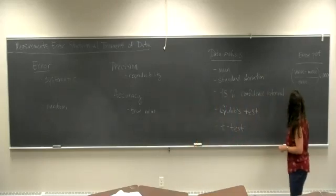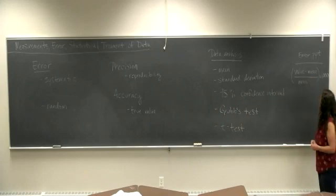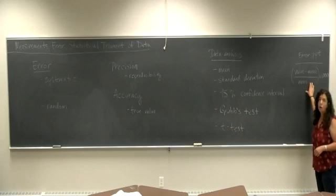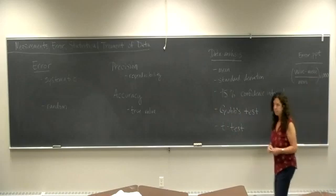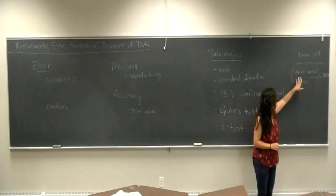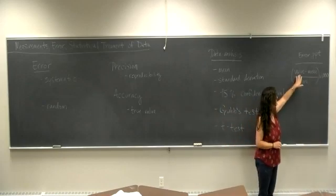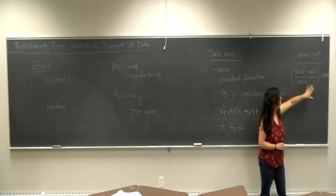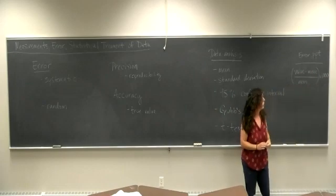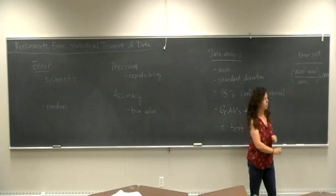The parts per thousand is just another way of representing the absolute uncertainty. That's basically going to be the difference in the value of the measured value versus your mean value, divided by the mean times a thousand. That would be an error in parts per thousand.